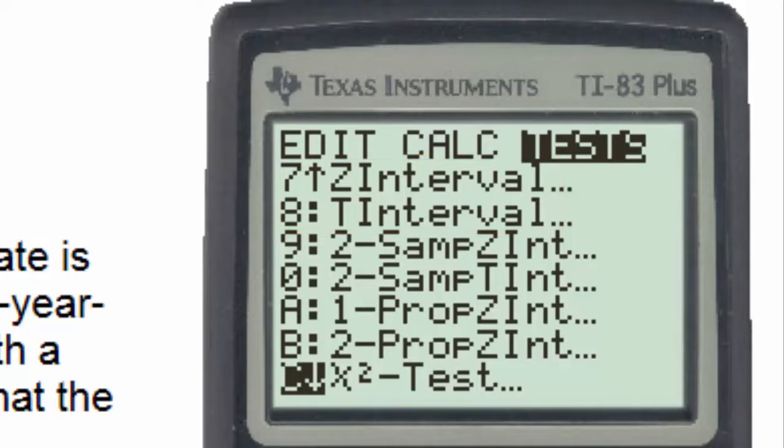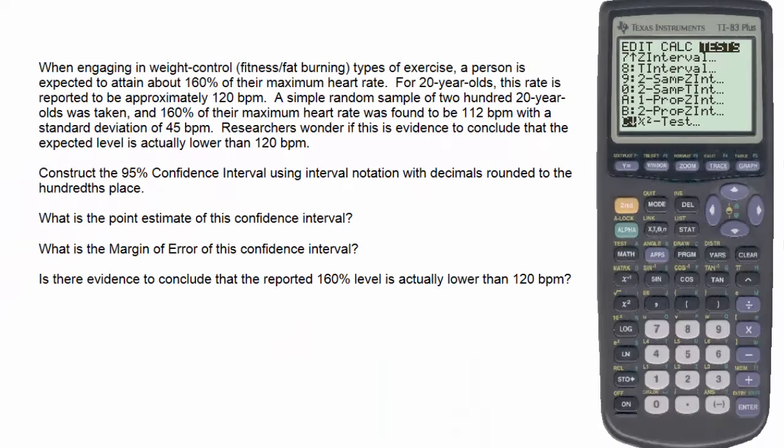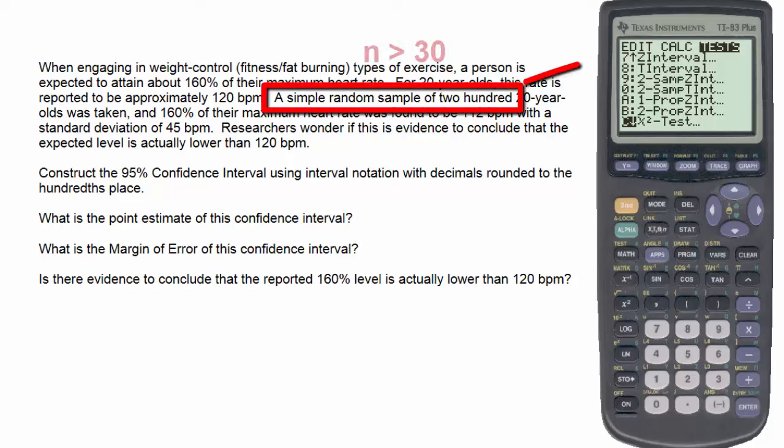Of the two different choices, the Z-interval and T-interval, the determining factor is the sample size. For sample sizes of more than 30,